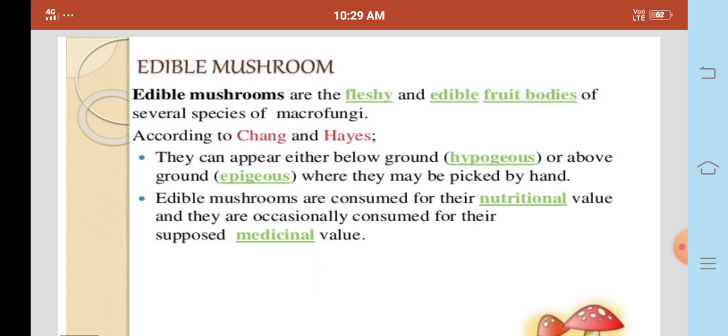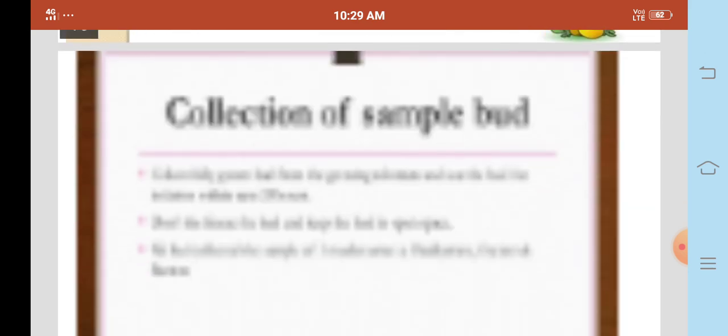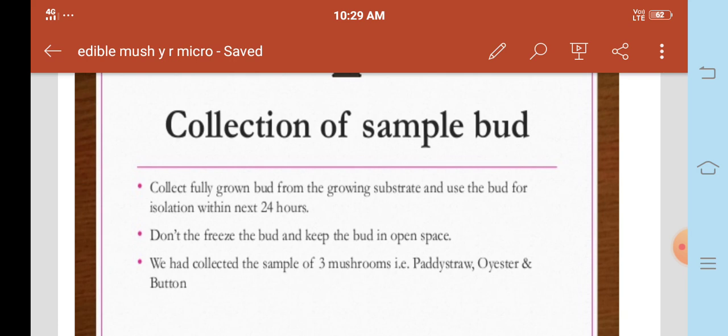Fruit bodies of several species of macro fungi. According to change in habitat, they can appear either below ground hypogeous or above ground epigeous where they may be picked up by hand. Edible mushrooms are consumed for their nutritional value and occasionally for their supposed medicinal values. Collection of sample bud: collect fully grown bud from the growing substrate and use the bed for isolation within next 24 hours. Don't freeze the bud and keep the bud in open space.